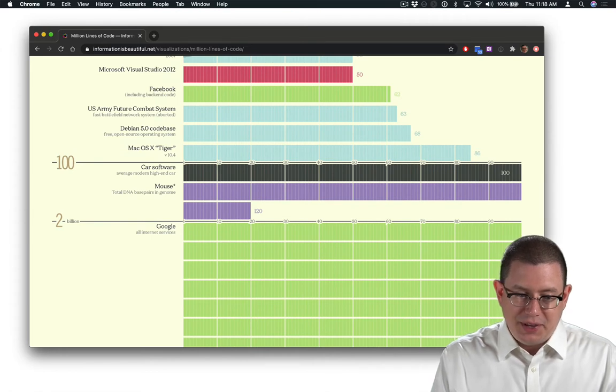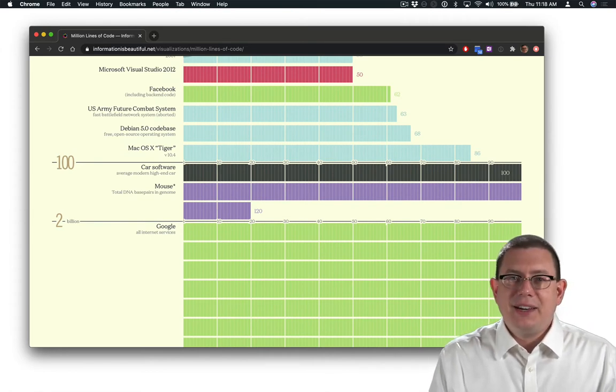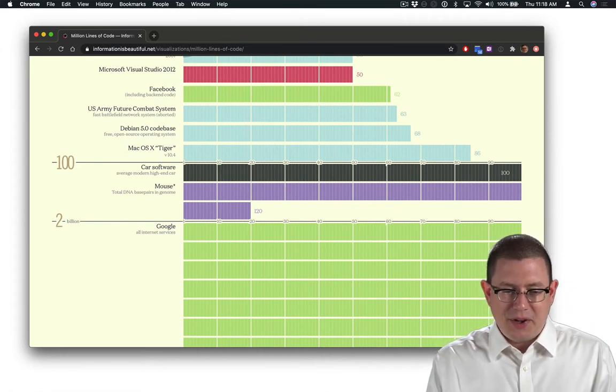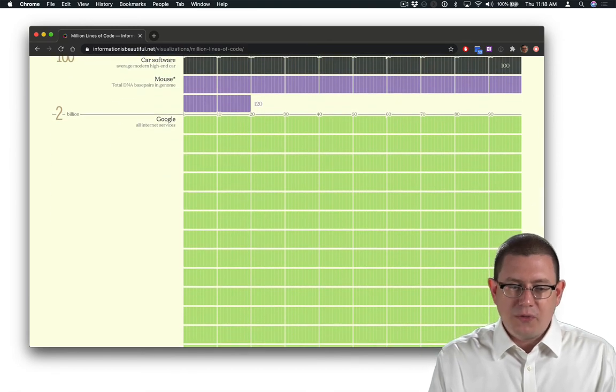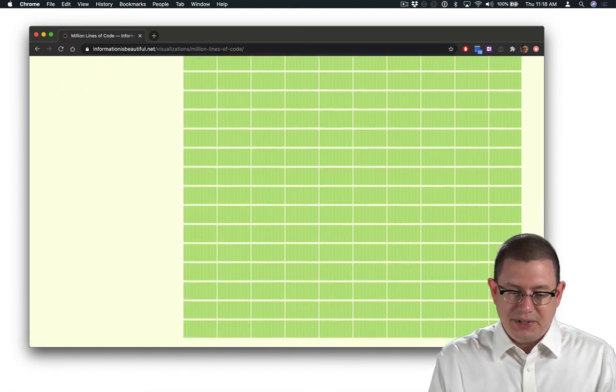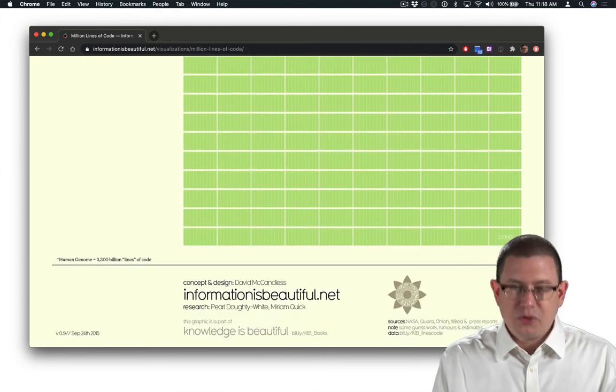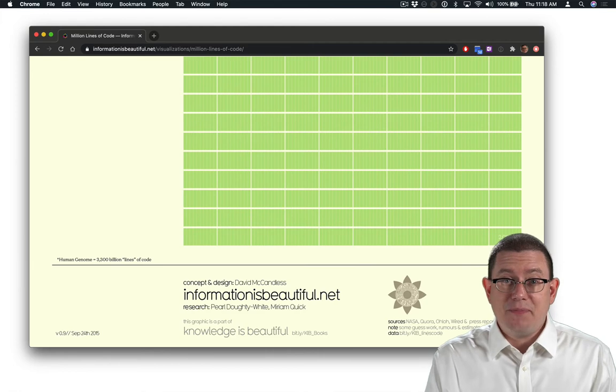the Large Hadron Collider, and eventually even the genome of a mouse, somehow represented in terms of lines of code here, and topping out with all of Google's internet services at 2 billion. This is information from 2015. By now, things can only have gotten bigger.